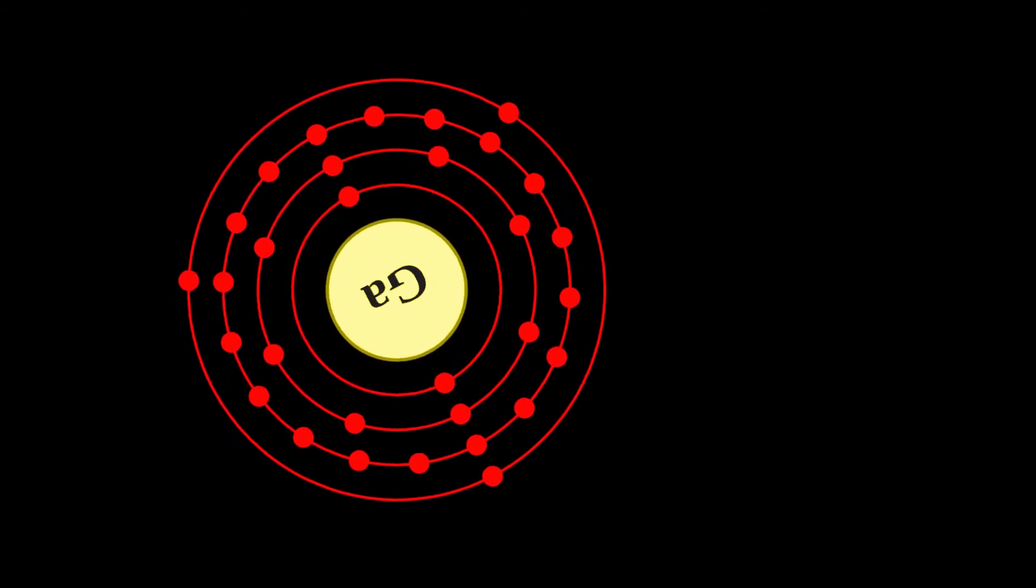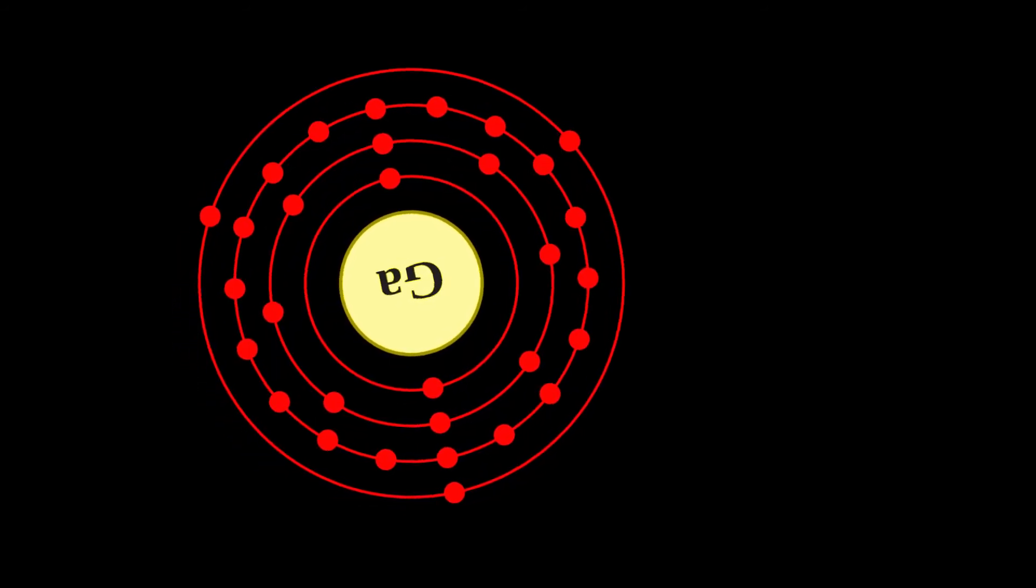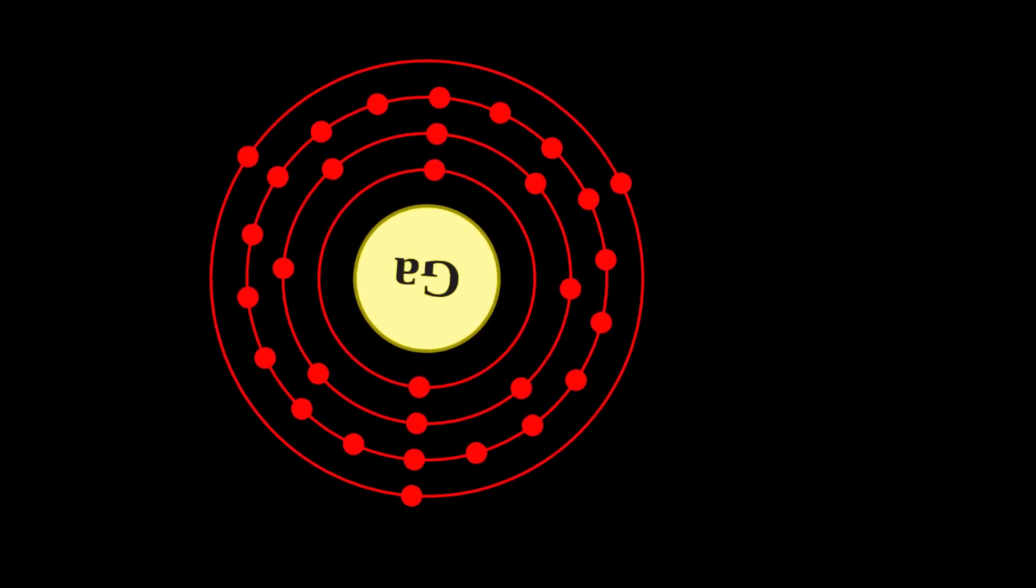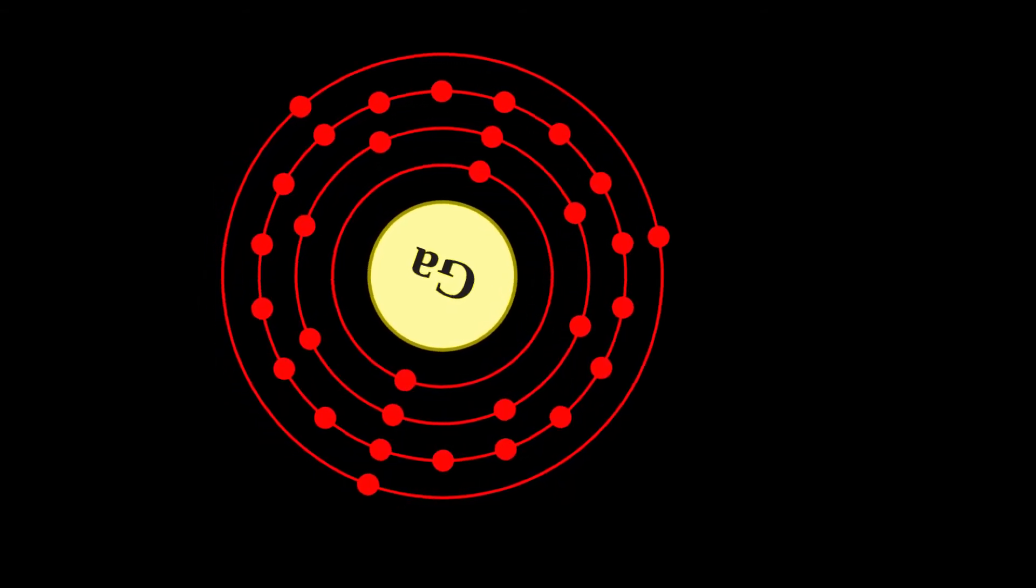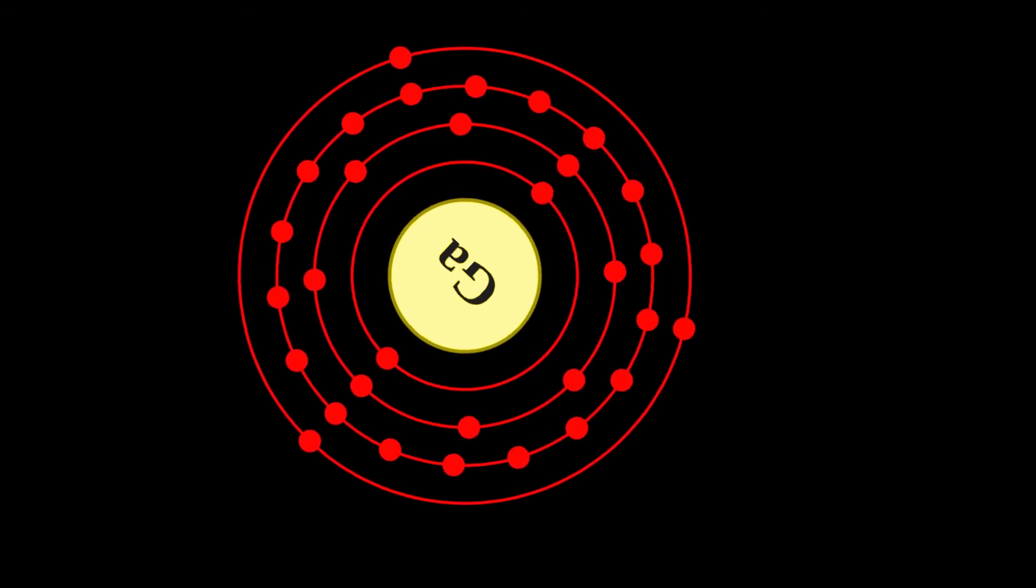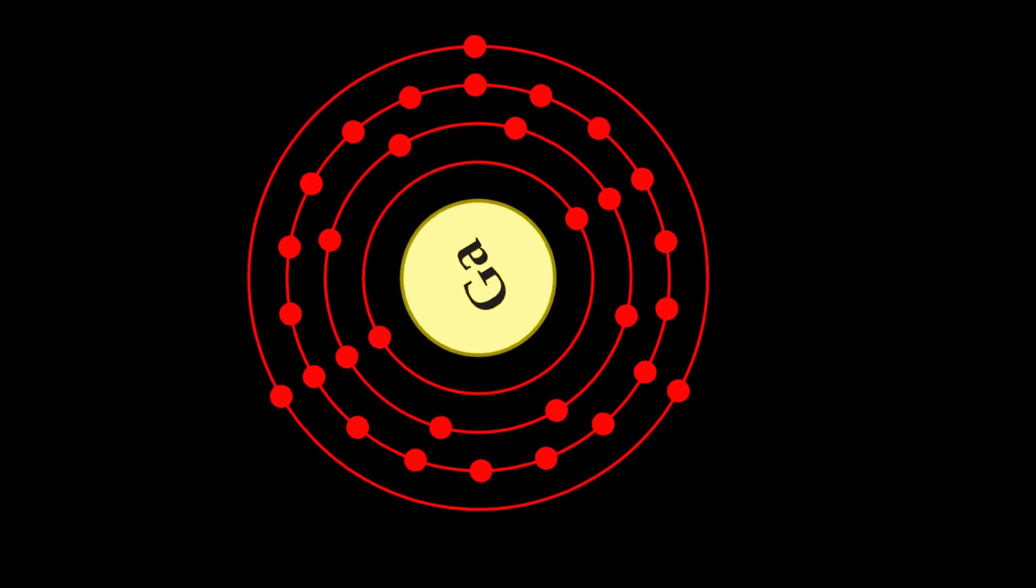Semiconducting gallium nitride and indium gallium nitride produce blue and violet light-emitting diodes and diode lasers. Gallium is also used in the production of artificial gadolinium gallium garnet for jewelry.